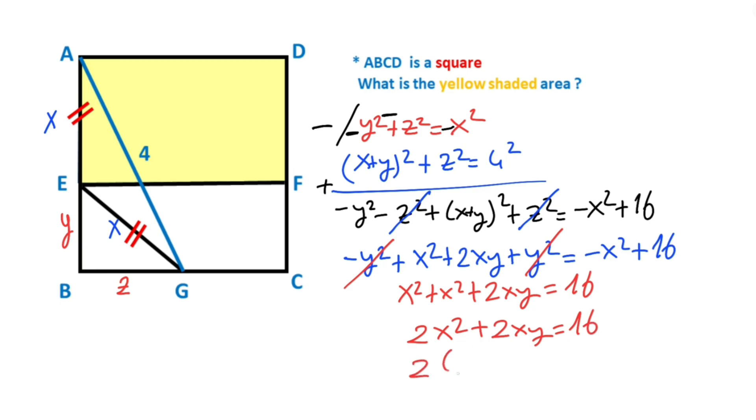If we factor the left side of the equation, therefore X squared plus XY must equal 8 units.